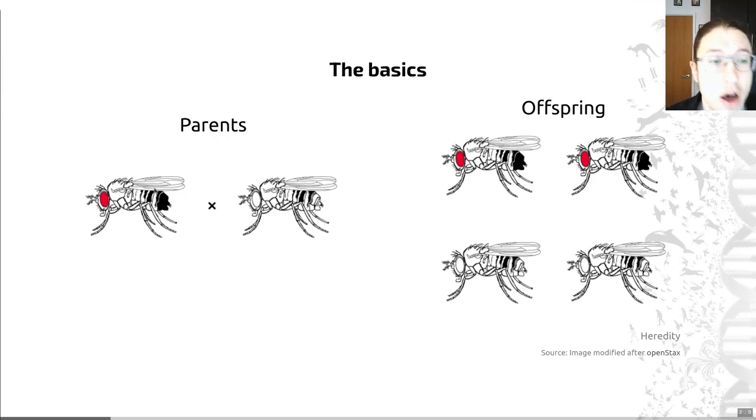So we have adults with red and white eyes within this species. And in the offspring, eyes aren't pink. They're not a combination of the colors from both parents. Rather, the offspring have either red eyes or white eyes. And that's a clear cut example of heredity.